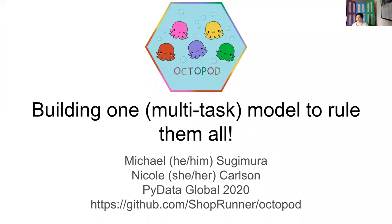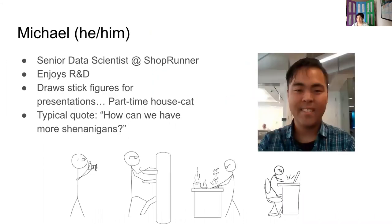Hi, I'm Nicole Carlson, pronouns she, her. Together with my coworker, Michael, we're going to tell you about our first collaboration together, where we built a multitask model to solve a product classification task at our company. Like Nicole mentioned, my name is Michael, pronouns he, him, his.